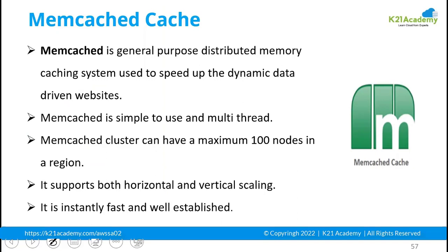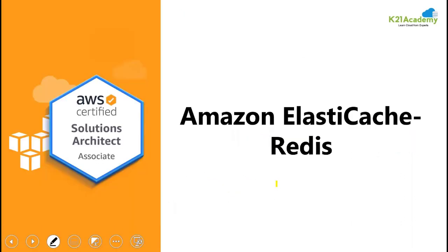With Memcached, Amazon ElastiCache supports a multi-threading environment, meaning parallel processing can happen. There will be multiple nodes inside the cluster, all working in a parallel processing model to respond to user queries. The Memcached cache cluster supports both horizontal and vertical scaling. Horizontally, you can launch up to 100 nodes in a cluster, and vertically the same node can be scaled up for faster turnaround time.